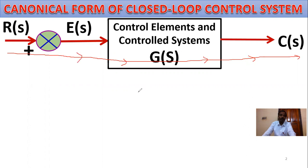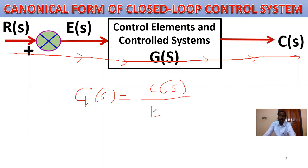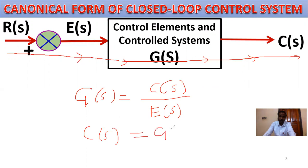The concept of the forward path transfer function: G of S equals the controlled output C of S divided by the actuating signal E of S. This is the forward path transfer function.